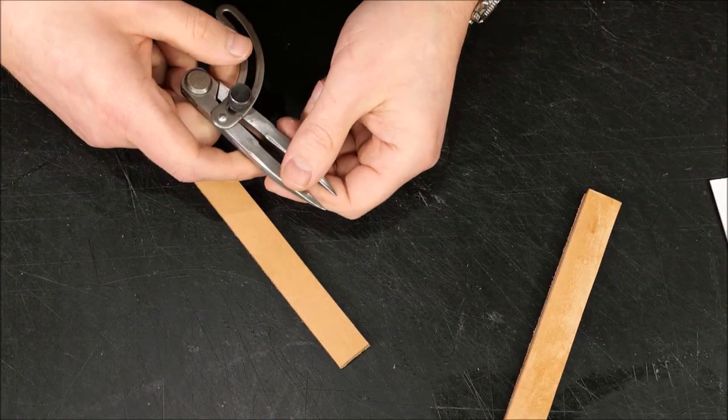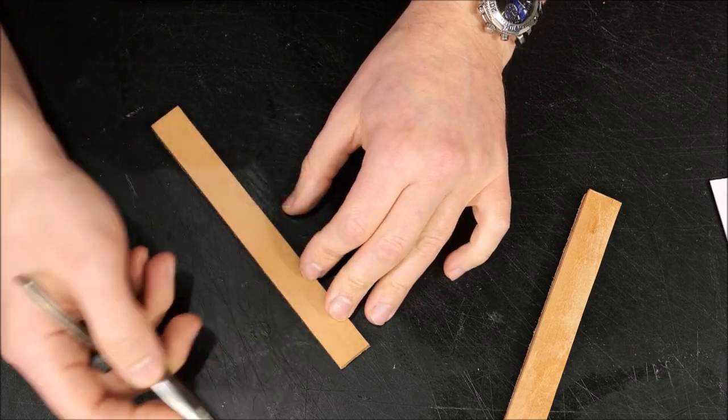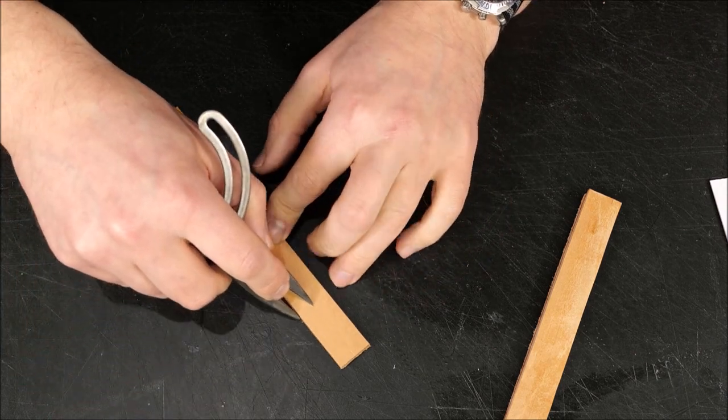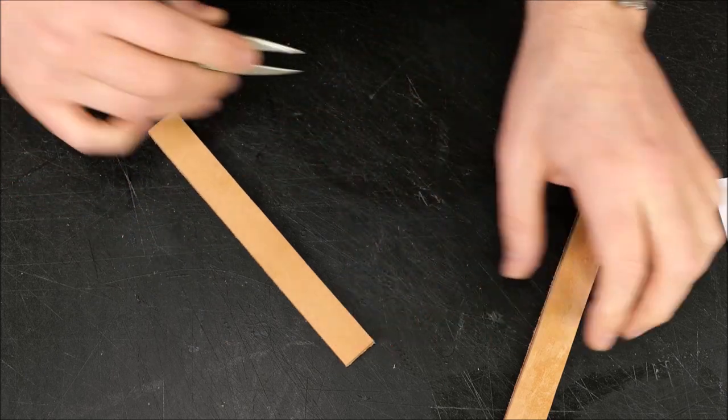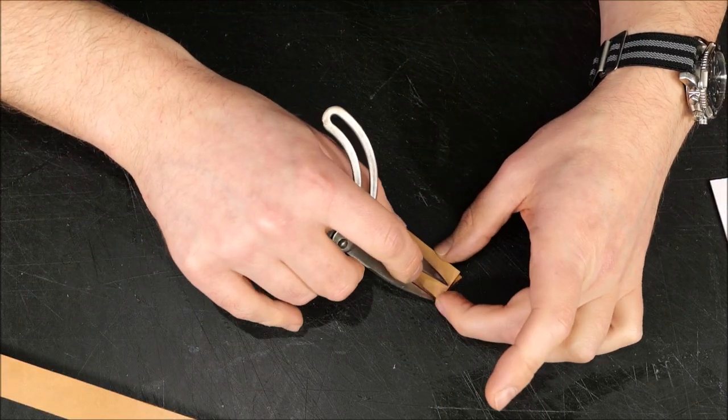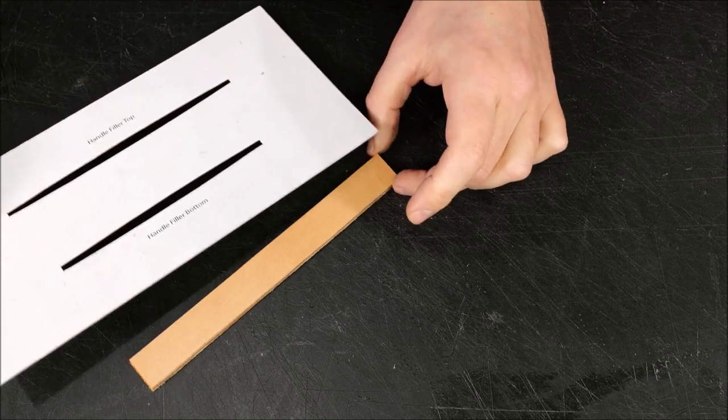Now grab a set of wing dividers and roughly about halfway in, just mark a faint line here. This just helps keep things central.